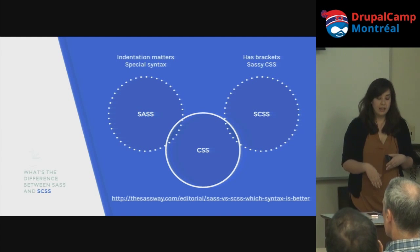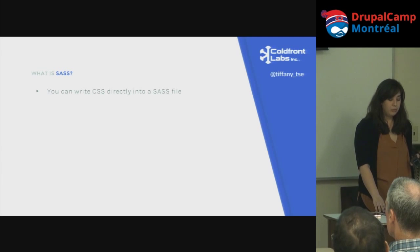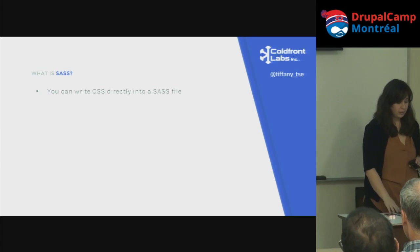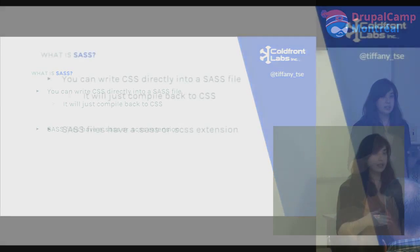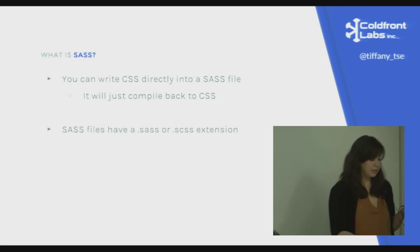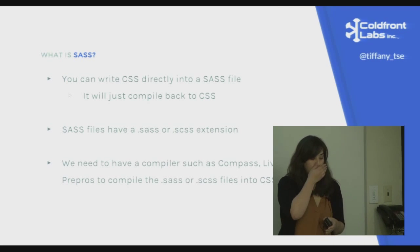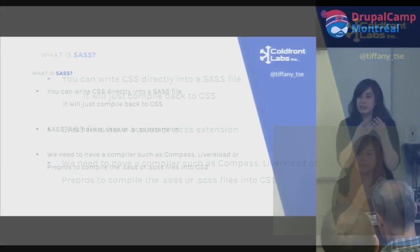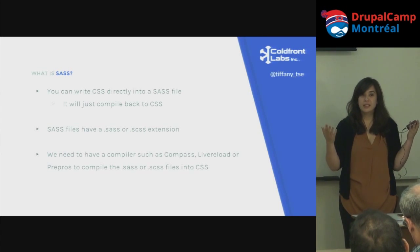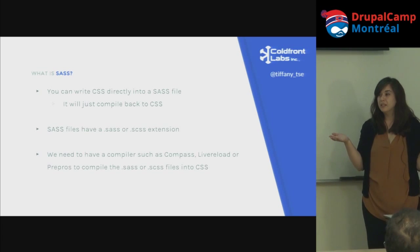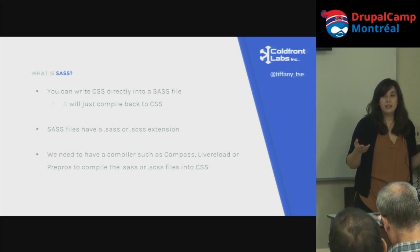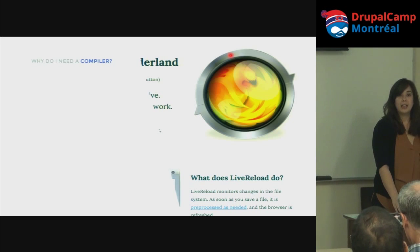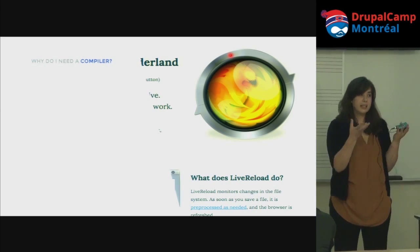You can write CSS directly into a .scss file — when I say Sass here I'm talking about .scss — and it will compile directly back into CSS. You need a compiler such as Compass or Live Reload to render that Sass file into CSS, otherwise your browser won't know what to do with it. A compiler is just an application — either command line or a GUI — that takes your Sass file and turns it into CSS.